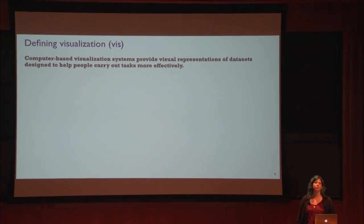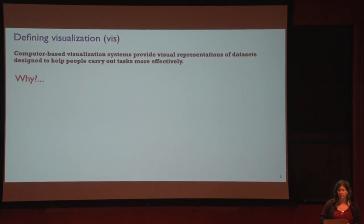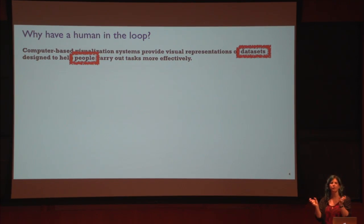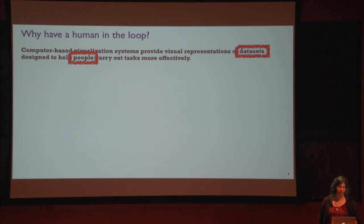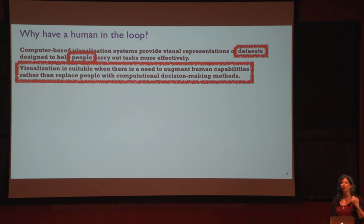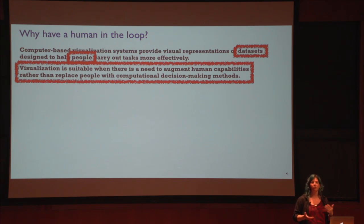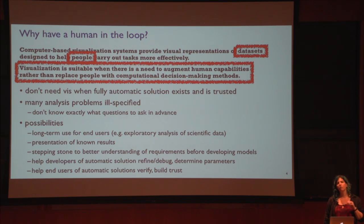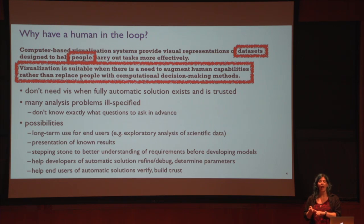Why are we even bothering to do this? Why are we insisting that data and people are actually in the same sentence? When would we do viz? Visualization is suitable when there's some need to augment the capabilities of a human rather than completely replace them with some sort of computational decision-making method. You don't need viz if there is a solution that is fully automatic and that you trust.